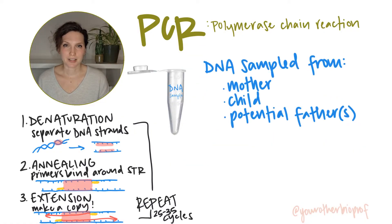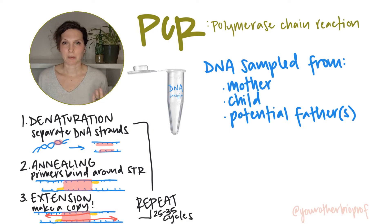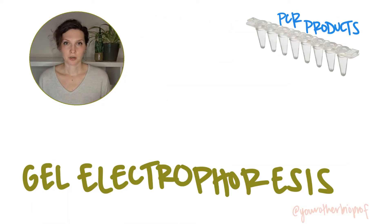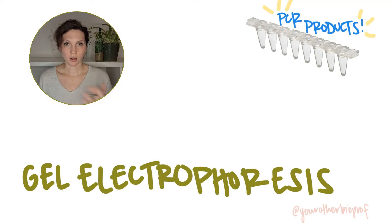If we're doing paternity analysis, our sample DNA would come from the child, the mother, and any potential fathers. And if you're looking at a forensic analysis, your DNA samples would come from the crime scene, from any potential suspects, and from any victims. So we've done our PCR — we've got millions of copies of each STR locus that we're interested in from all of our DNA sample sets.